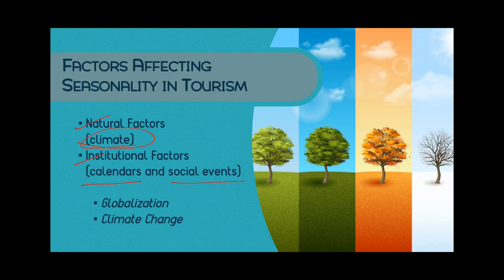These factors are influenced by larger factors that change them. The first is globalization — due to globalization, it's easier to travel outside and we can follow a more global calendar. For example, for the Olympics held in July in Japan, whatever your schedule is, if you want to watch the Olympics, you have to go in July even if it's not peak season in your area. Globalization can change seasonality patterns of tourism.